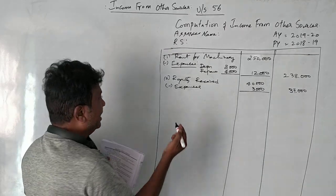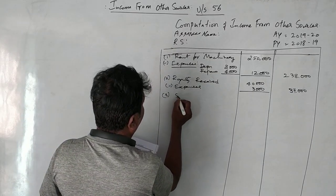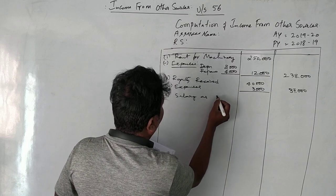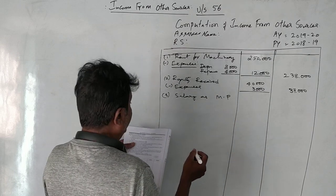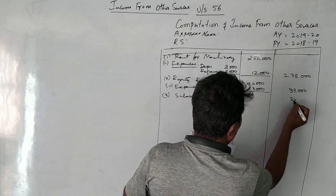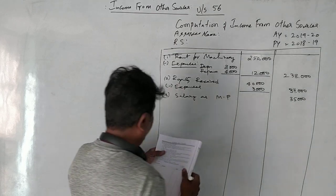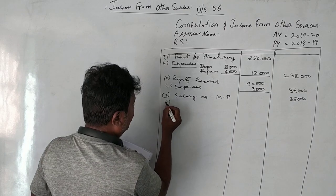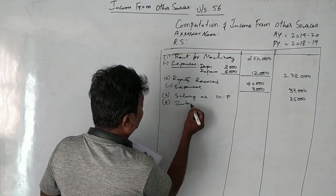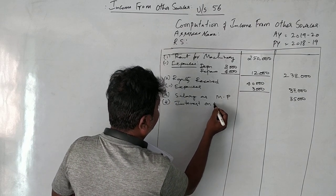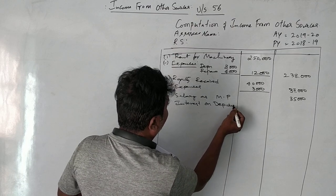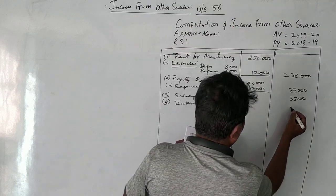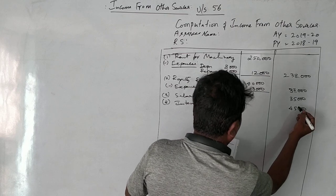Salary as a Member of Parliament is fully taxable. Income from fixed deposit is also fully taxable — we have already discussed it. Interest on deposits of ₹45,000 is taxable.